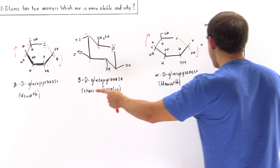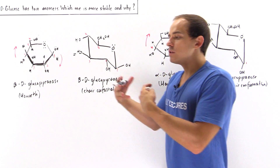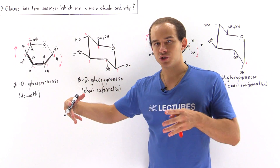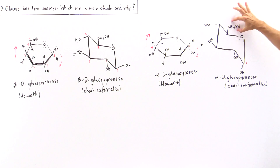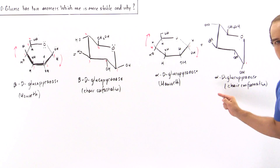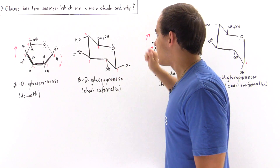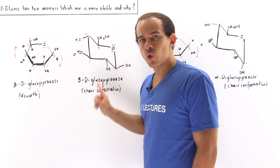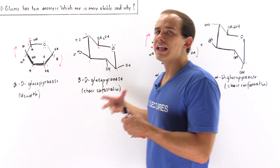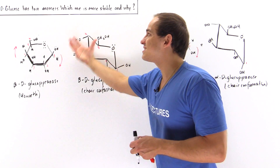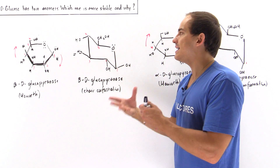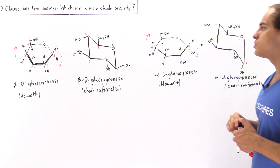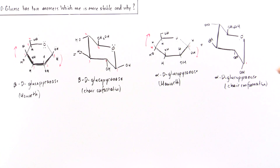The question is which is more stable: the beta or the alpha version? When larger groups are in the equatorial position, that creates a more stable conformation. In the alpha case, four groups point equatorially and one — the hydroxyl on the anomeric carbon — points axially. In the beta case, all large groups point equatorially, as far from one another as possible, giving less steric hindrance. Therefore, beta-D-glucopyranose is the more stable and predominant anomer of D-glucose because all hydroxyl groups are in equatorial positions, compared to the alpha anomer which has one axial hydroxyl on the anomeric carbon.